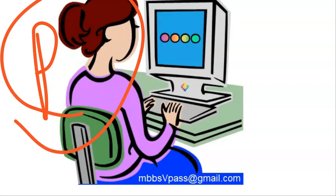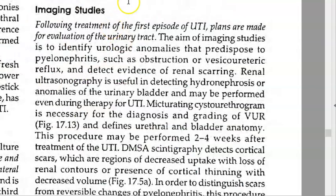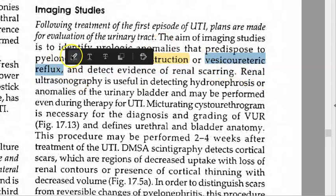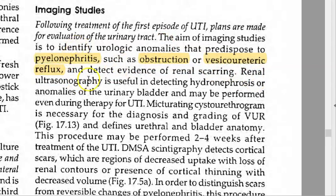For that, you'll have to do imaging. Normally in adult UTI, you will just do urine culture sensitivity and give antibiotics. But in an infant, you have to do imaging. This is very important. You'll have to check whether there is obstruction, vesicoureteric reflux, or pyelonephritis.